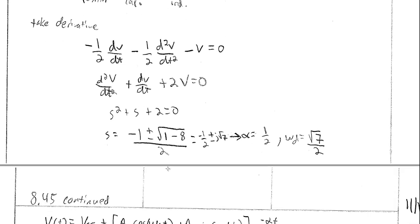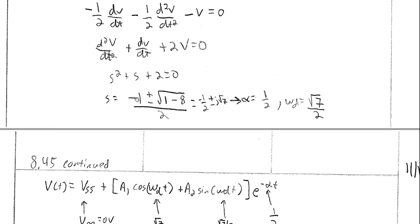Solving for s gives s equals negative one-half plus or minus j·√7/2. Note: the √7 should be divided by two — that is one mistake in the posted solution. So alpha equals one-half and omega_D equals √7/2. The presence of complex values tells us this is an underdamped circuit.